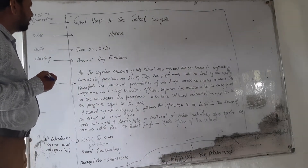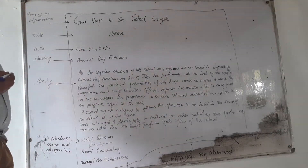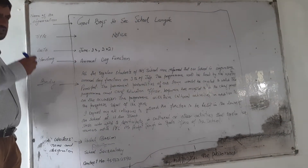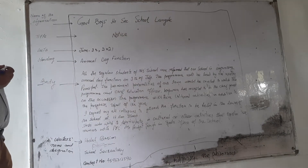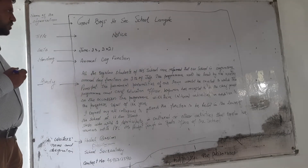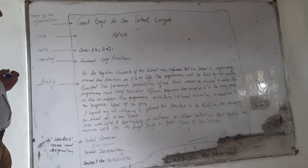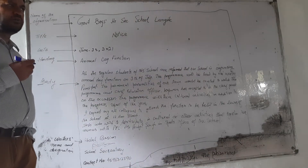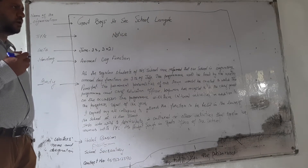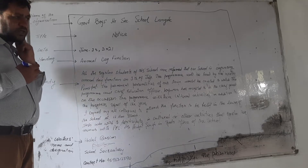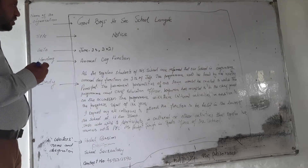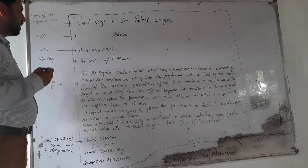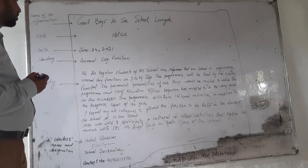This is the Class 11th. Today we will do the question on how to write a notice, and you will be asked this question in Section C of your question paper. That is writing skills and grammar. This is one of the questions from writing skills — question number three — which covers notes writing, poster designing, and advertisement writing. Today we will do notice writing.